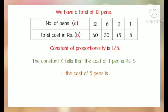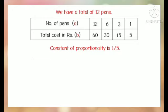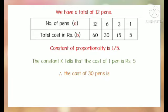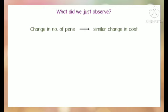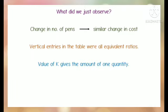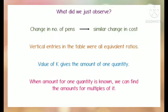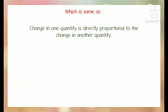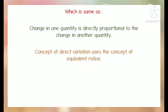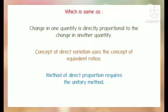Therefore, the cost of 5 pens: 5 = (1/5)×B, so B = 25. The cost of 30 pens: 30 = (1/5)×B, so B = 150. What did we observe? Change in number of pens gives a similar change in cost. Vertical entries in the table were all equivalent ratios. The value of K gives the amount of one quantity. The concept of direct variation uses equivalent ratios, and the method requires the unitary method.